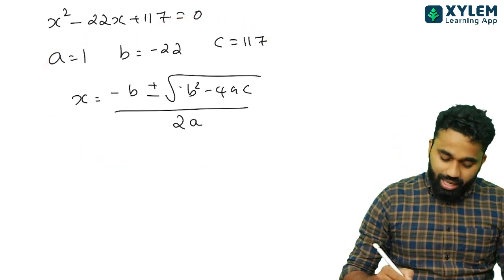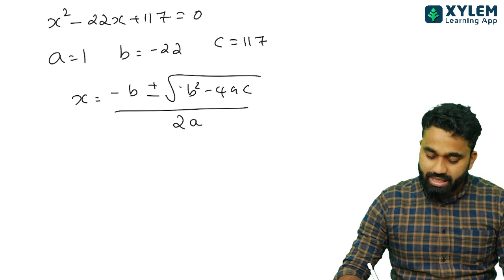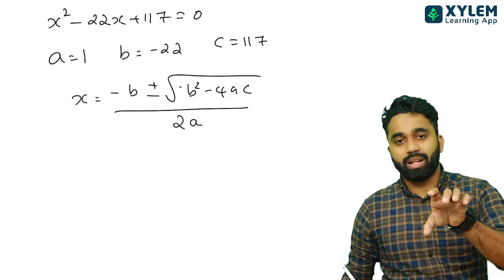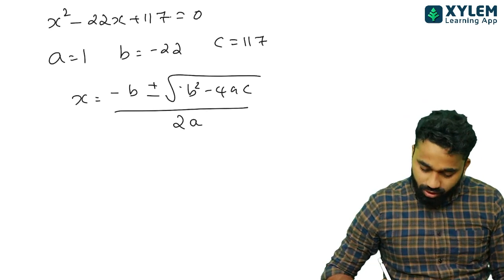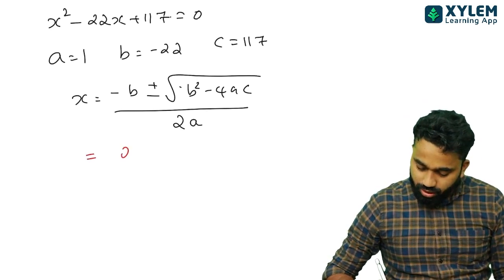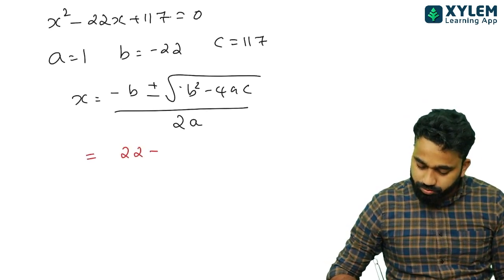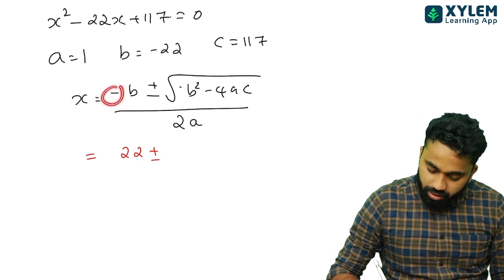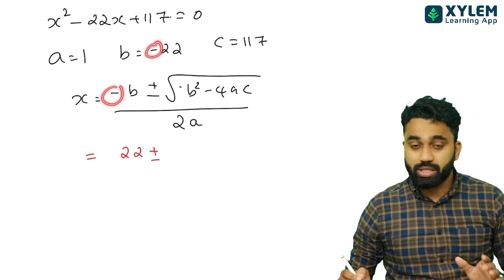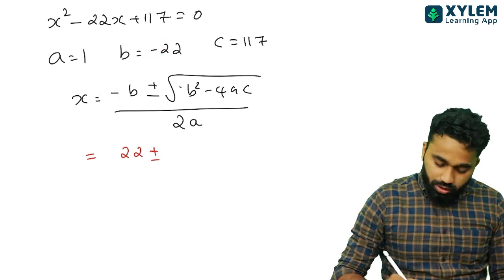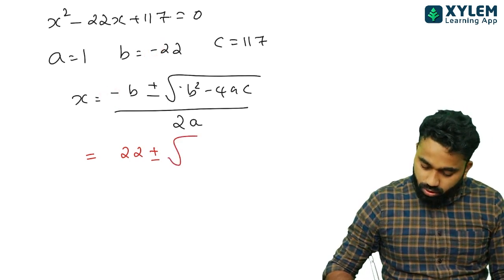Now we will try to do this. Minus minus 22 is plus 22. Now minus 3 is plus 22 plus 0.